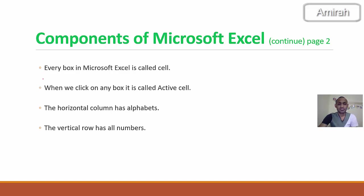Every box in Microsoft Excel is called a cell. When you click on any box, it is called the active cell. The horizontal column has alphabets and the vertical row has whole numbers. We will do a demo so you understand the components of Microsoft Excel. It is very important to understand these components — the first, second, and third lectures are all important for understanding what Microsoft Excel is.